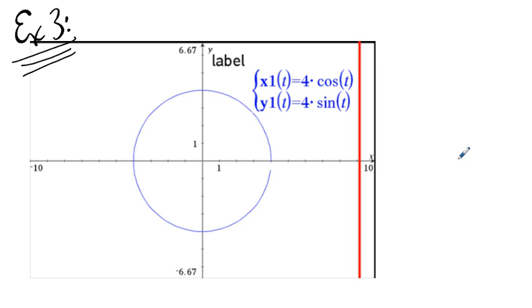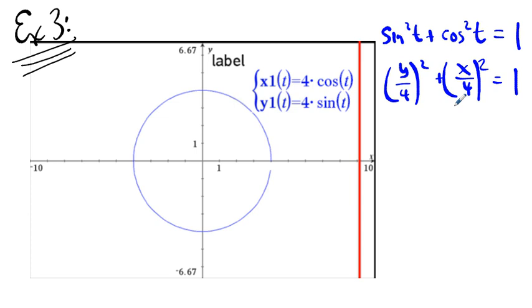Why is it a circle? Well, what do we know about how sine and cosine are related? We know that sine squared t plus cosine squared t is 1. Well, sine squared t, that's y over 4. And cosine squared t, that's x over 4. This is the same thing as x squared plus y squared is 16. Circle centered at the origin, radius 4. So now I can definitely graph a wide variety of not functions, of relations that are not functions.